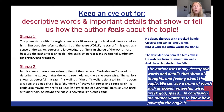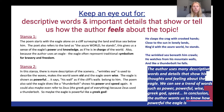In stanza two there is more description of the scenery. 'Wrinkled sea' is used to describe the waves, making the world seem old and the eagle seem wise. It says 'his walls,' as if the cliff belongs to him, showing the eagle as powerful. The eagle dives 'like a thunderbolt,' showing the eagle as both powerful and speedy. It could also refer to Zeus, the Greek god, because Zeus used a thunderbolt — so maybe the eagle is as powerful as a great god.